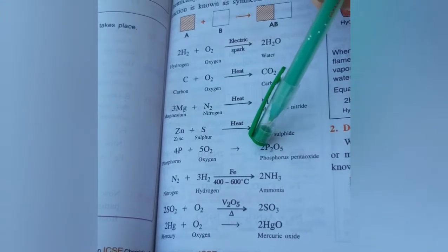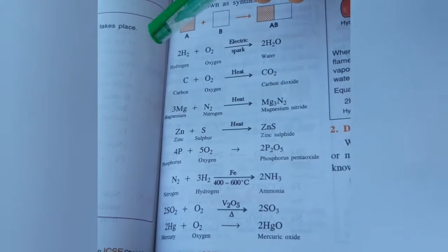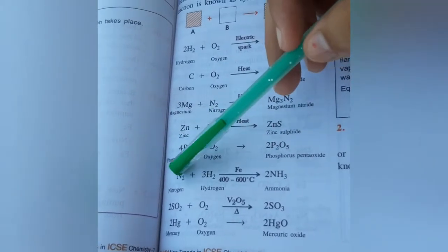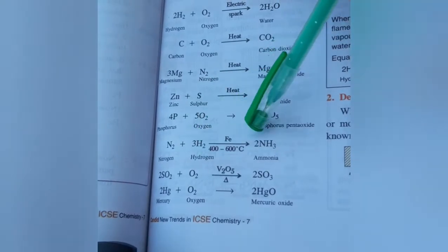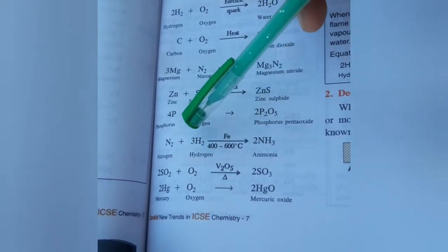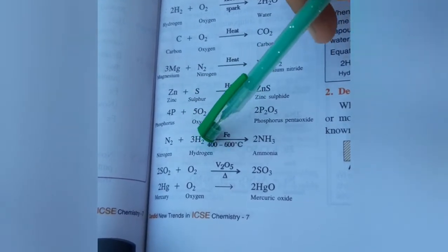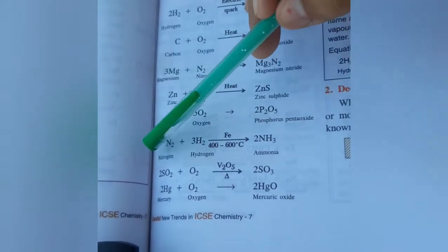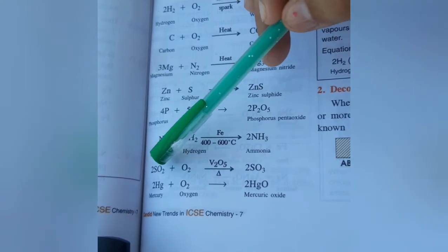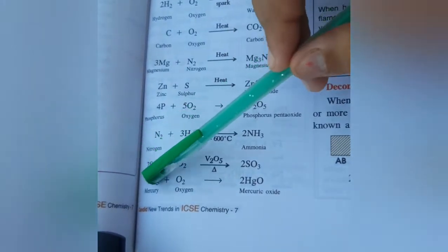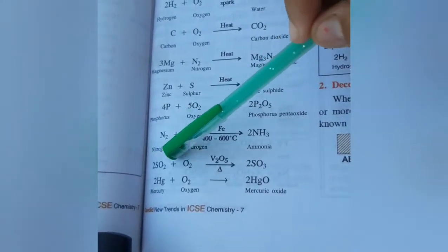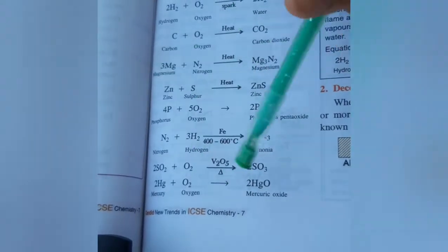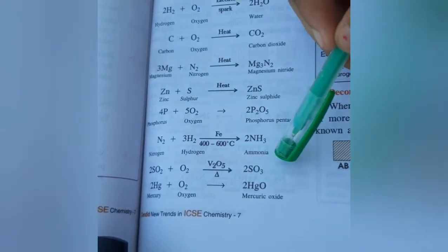N2 nitrogen plus 3H2 hydrogen on Fe at high temperature equals 2NH3. Next is 2SO2 plus oxygen on heating equals 2SO3.